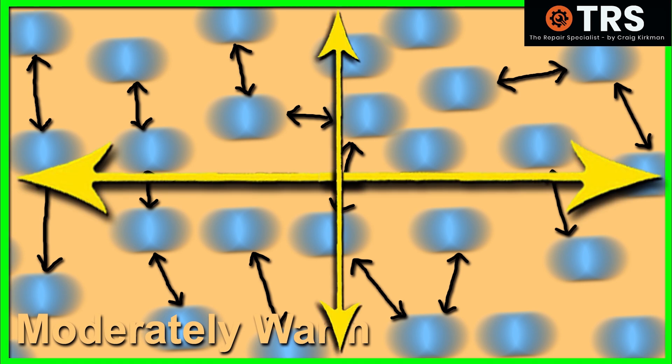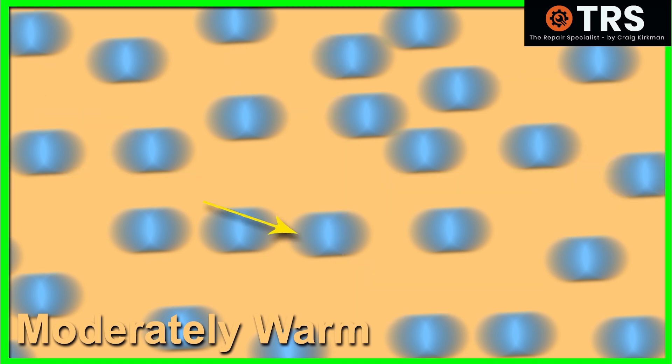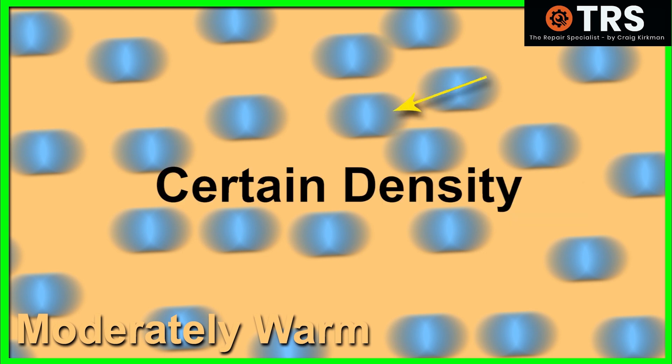In this instance, let's say the air is moderately warm. There's going to be a certain gap between each molecule because of their vibrations. That means in a certain area, there's only going to be so many molecules because they've spread out slightly from each other. In other words, there's a certain density to this air at a moderately warm temperature.